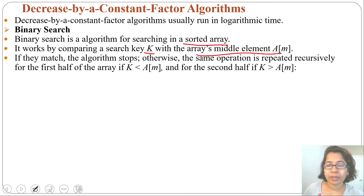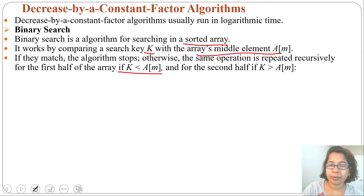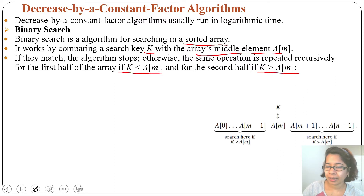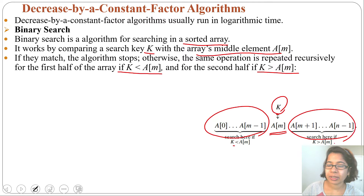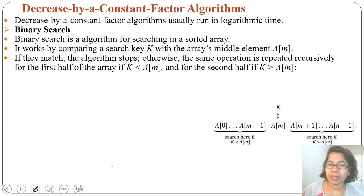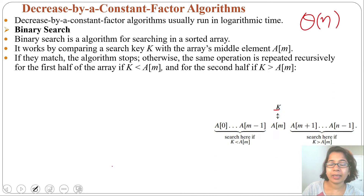If they match, the algorithm stops; otherwise the same operation is repeated recursively — for the first half of the array if k is less than a[m], and for the second half if k is greater than a[m]. If you remember, in sequential search we compare k with every element and the running time is Θ(n), whereas in binary search the running time is Θ(log n) because we only compare with the middle element.